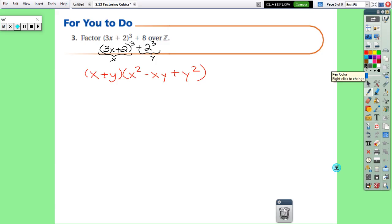So, x + y times x² - xy + y². So whatever is right here, we're going to plug in for each one of the x's, and whatever is right here, we're going to ignore the exponent, whatever is right here we're going to plug in for each y.